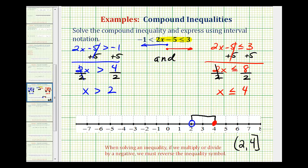And the last thing I want to mention is we could rewrite this compound inequality in the form that was given to us where the variable would be in the middle: x is greater than 2 and less than or equal to positive 4.